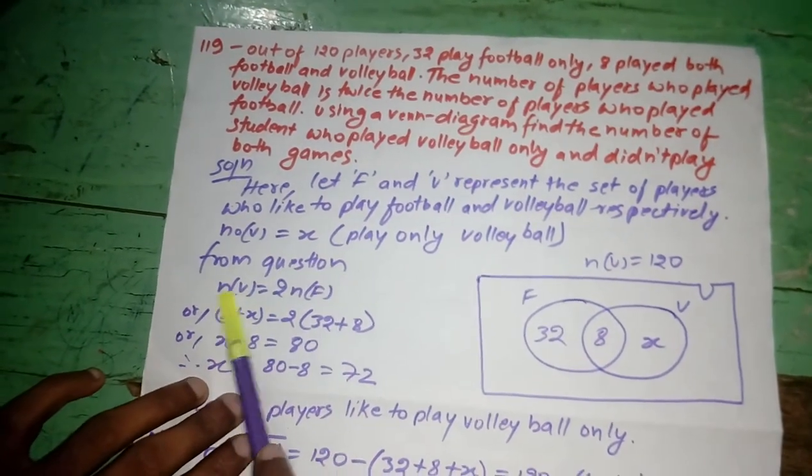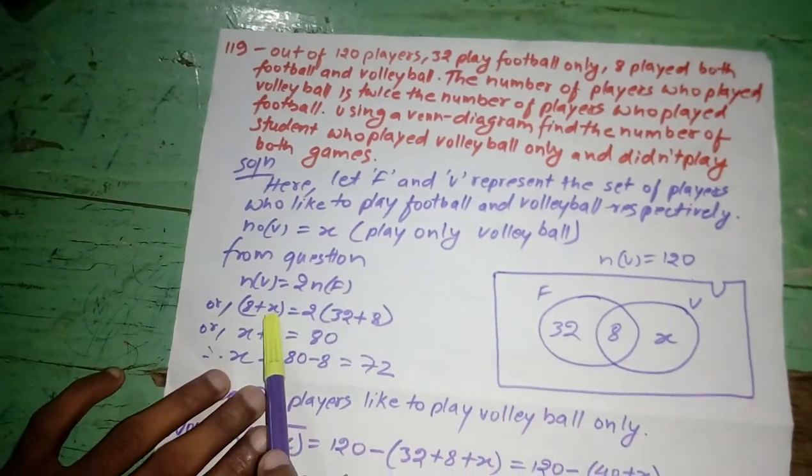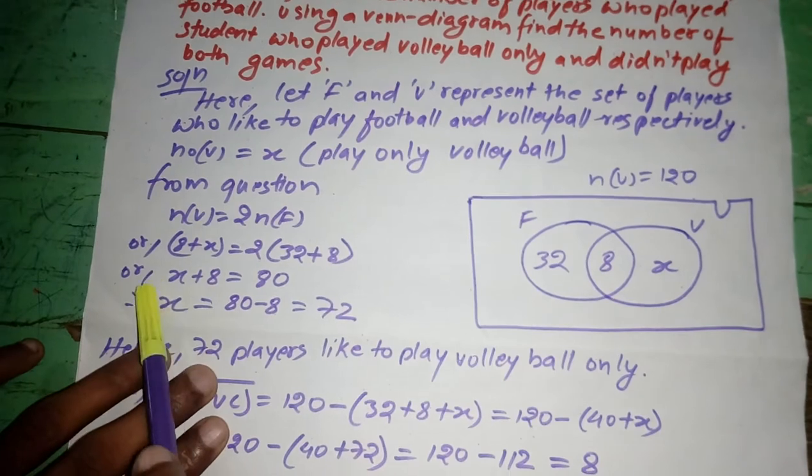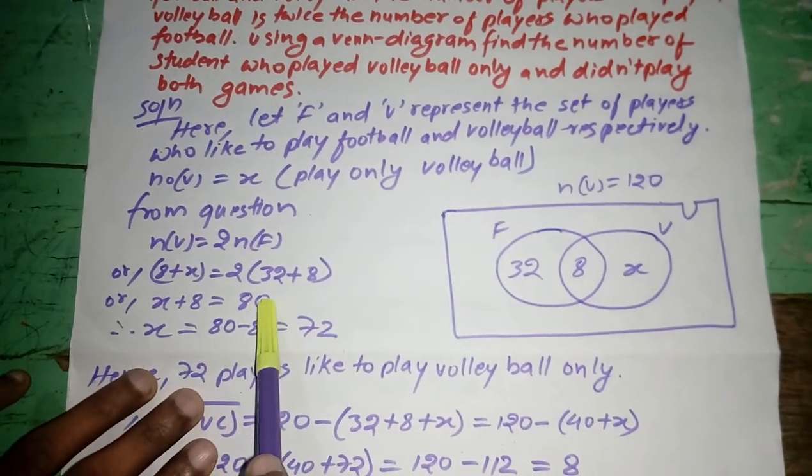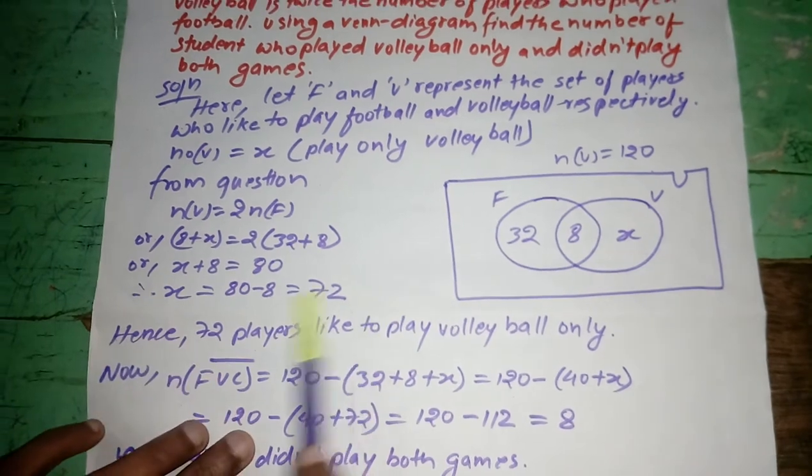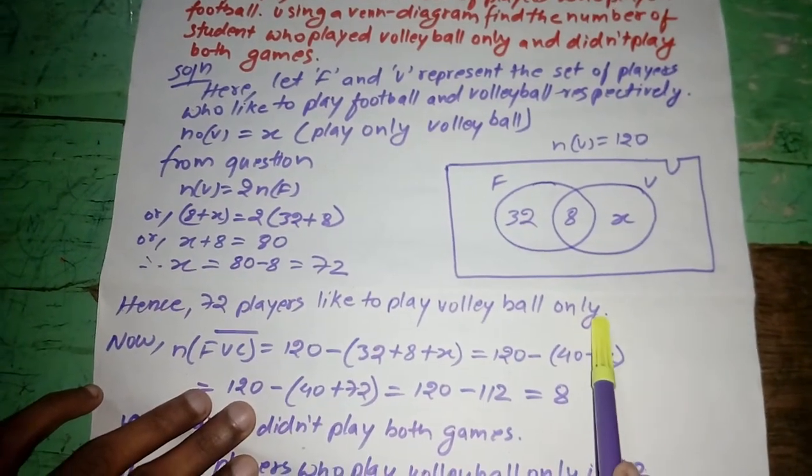From question given here, n(V) is equal to 2 n(F). Or 8 plus X is equal to 2 into 32 plus 8, or X plus 8 is equal to 80, or X is equal to 80 minus 8 is equal to 72. Hence, 72 players like to play volleyball only.